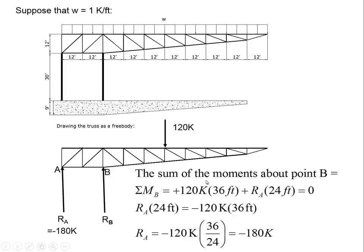So we're going to start by taking moments about point B, which is this point right here. The sum of the moments about point B is going to equal plus 120 kips. The reason being that this 120 kips is tending to produce a clockwise moment about point B, and the lever arm in this case is 36 feet, plus R A.